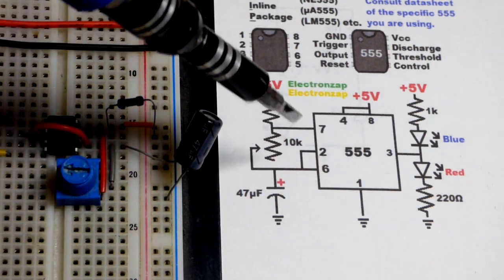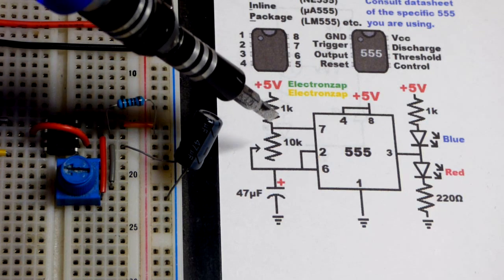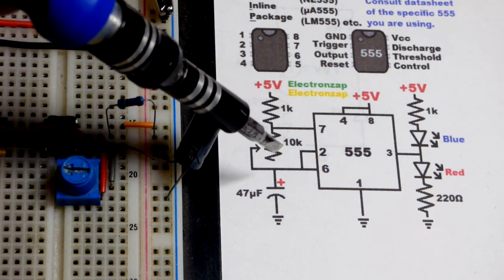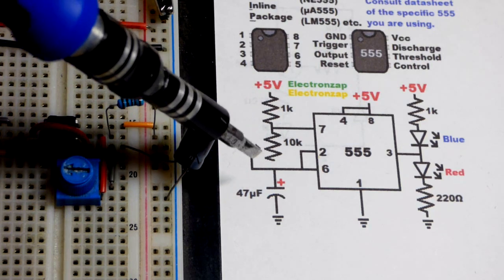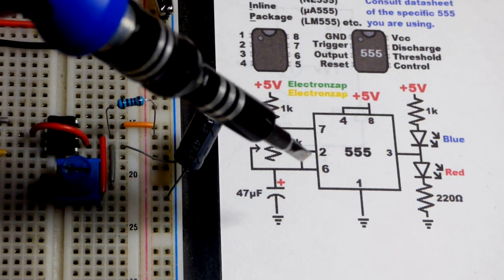So it charges, discharges instantly at no resistance. At full resistance, then the current has to flow through the whole resistance there before it comes to the wiper to charge the capacitor.